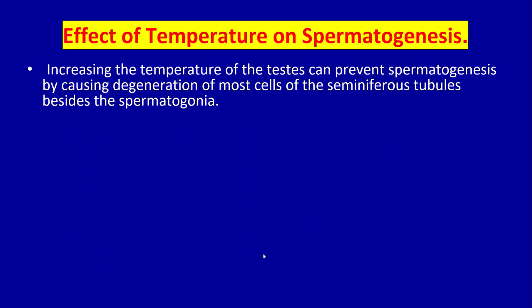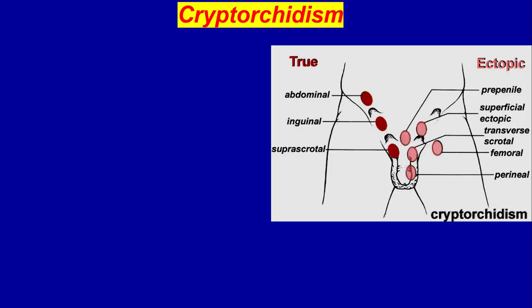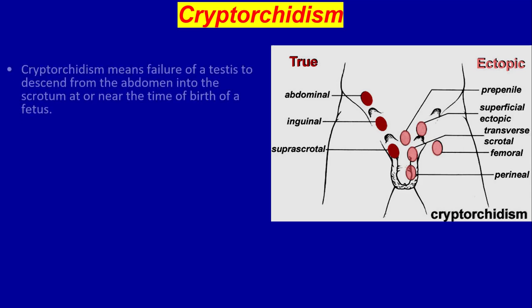Another cause of sterility is excessive temperature of the testes. Increased temperature can prevent spermatogenesis by causing degeneration of most cells of the seminiferous tubules, beside the spermatogonia. The testes are located in the dangling scrotum to maintain their temperature below the internal body temperature — usually about two degrees centigrade lower. The holosius scrotal reflex causes the musculature of the scrotum to contract and pull the testes close to the body to maintain this two-degree differential, so the scrotum acts as a cooling mechanism for the testes.